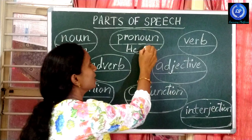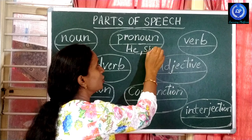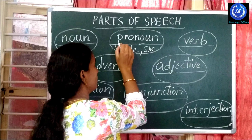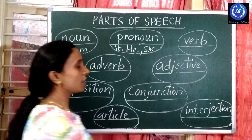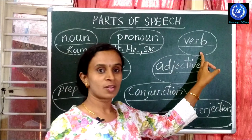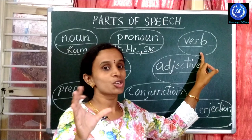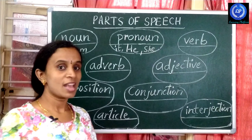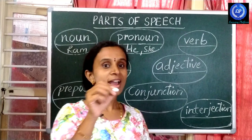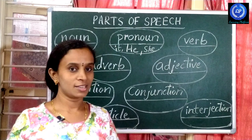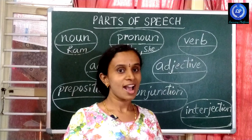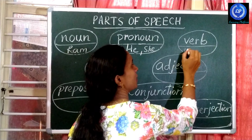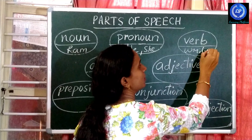Pronoun. A pronoun is a word which is used instead of a noun. For example: Ram — here he; Sita — here she. Like this. Then verb. A verb is a word which shows action. For example: I am writing, I am teaching, I am drinking — like this.